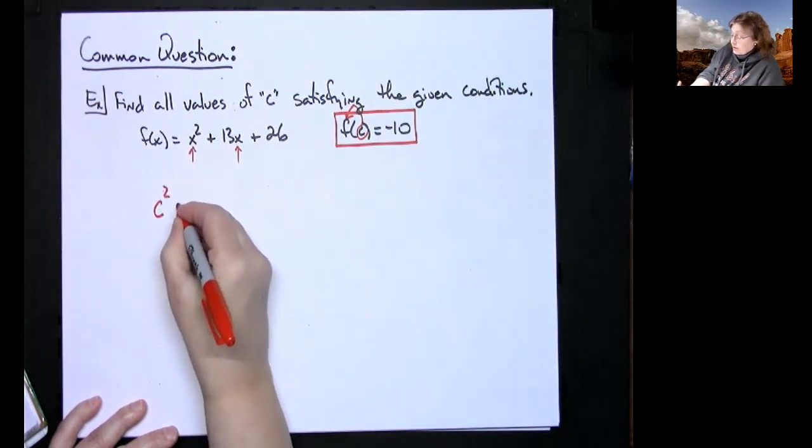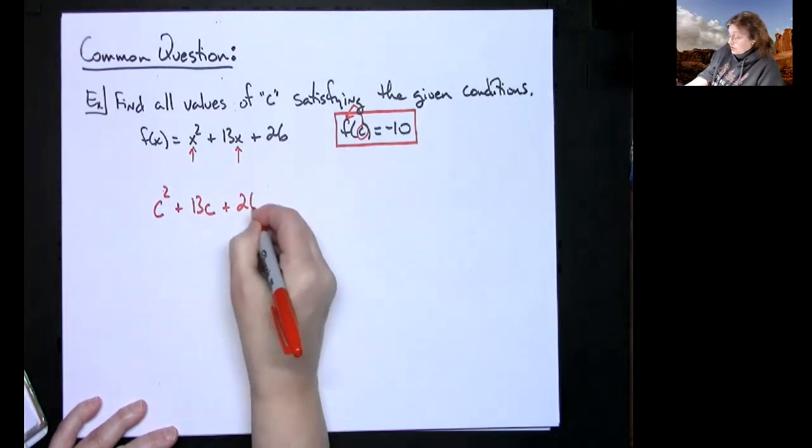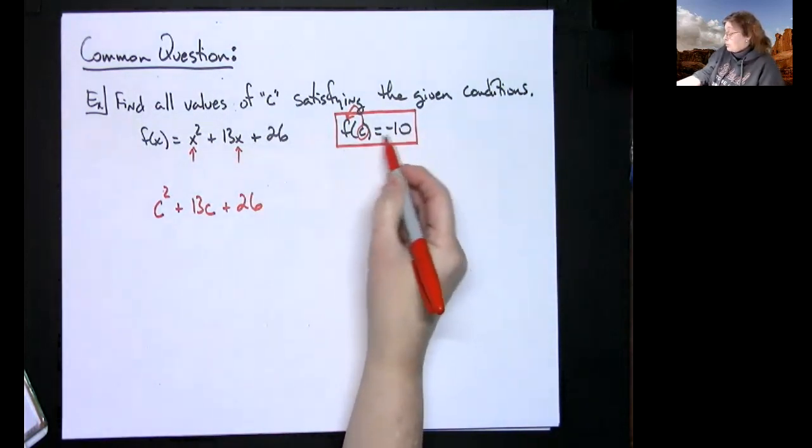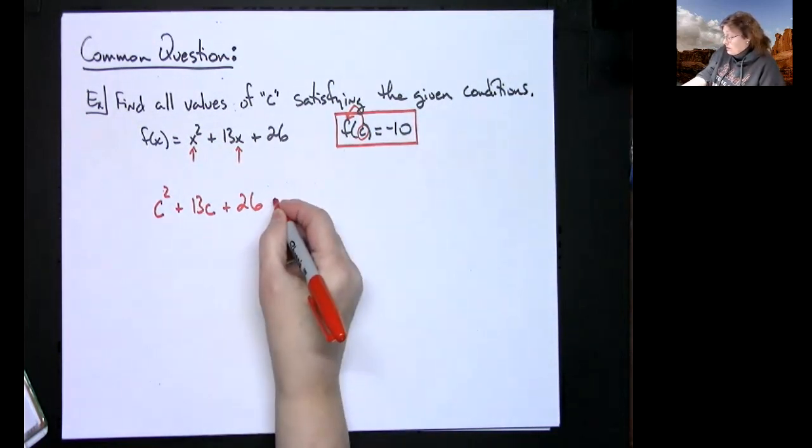I'm going to take c and plug it in, so I'm going to have c squared plus 13c and then plus 26. Then the rest of this says equals negative 10.